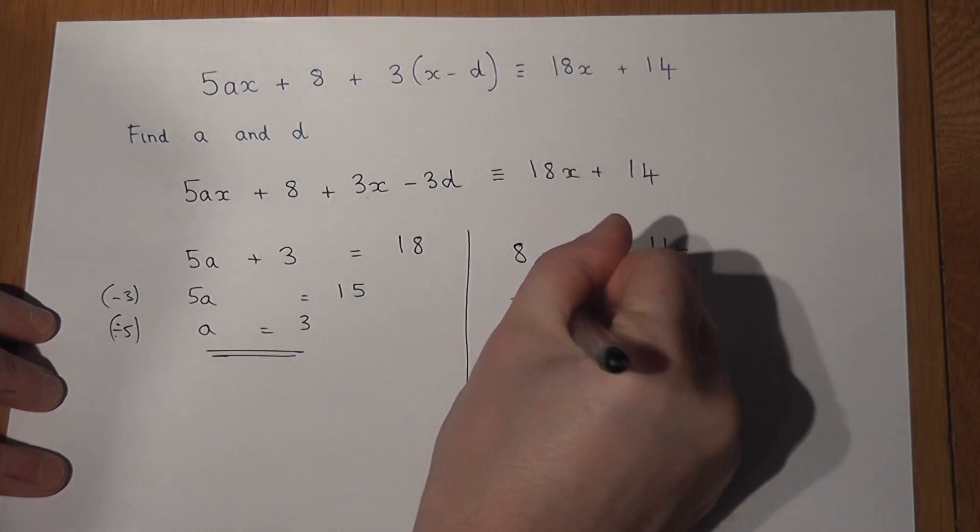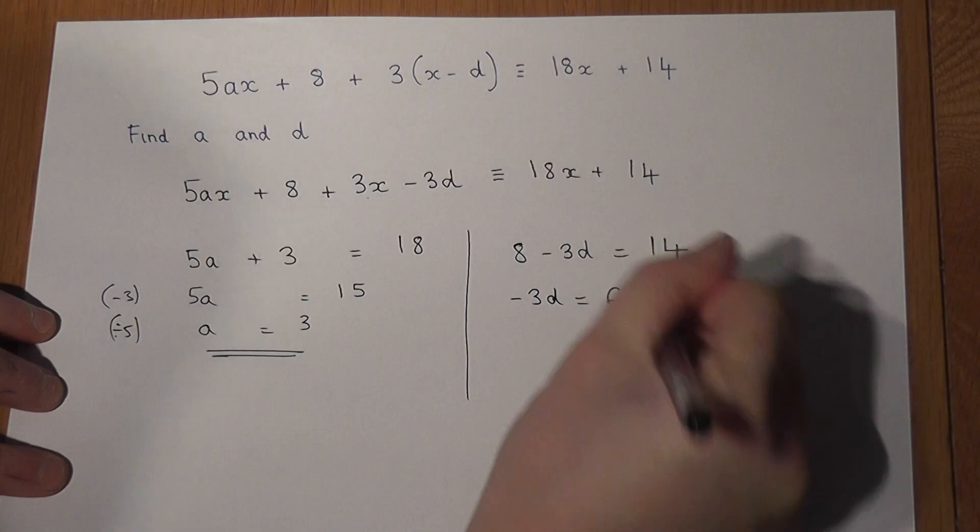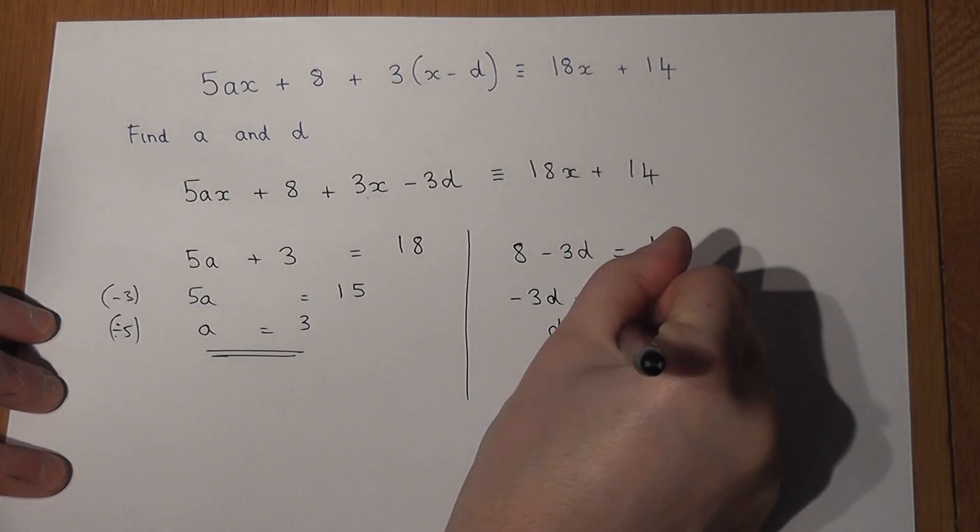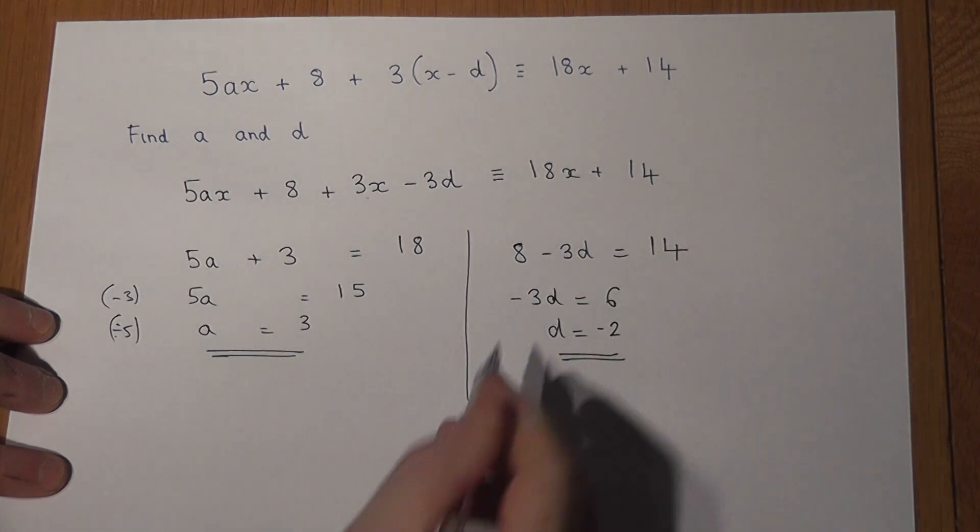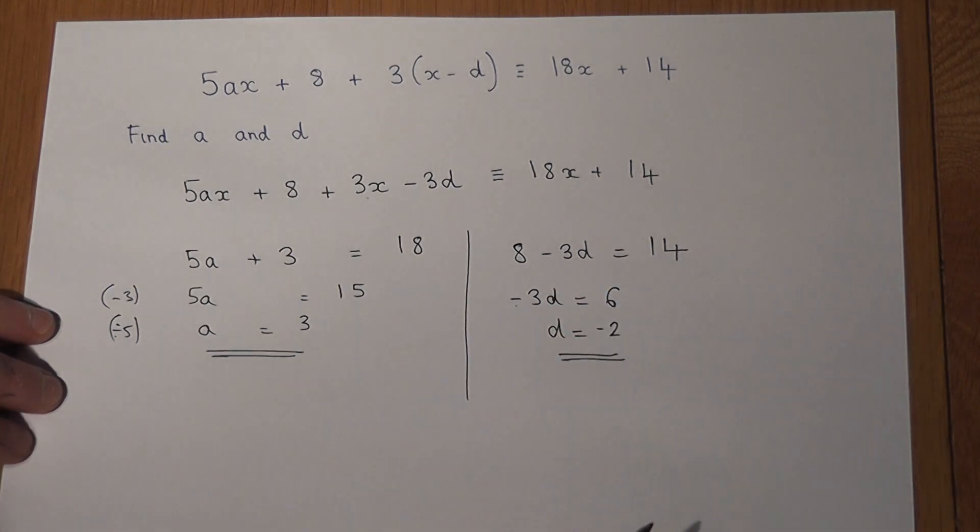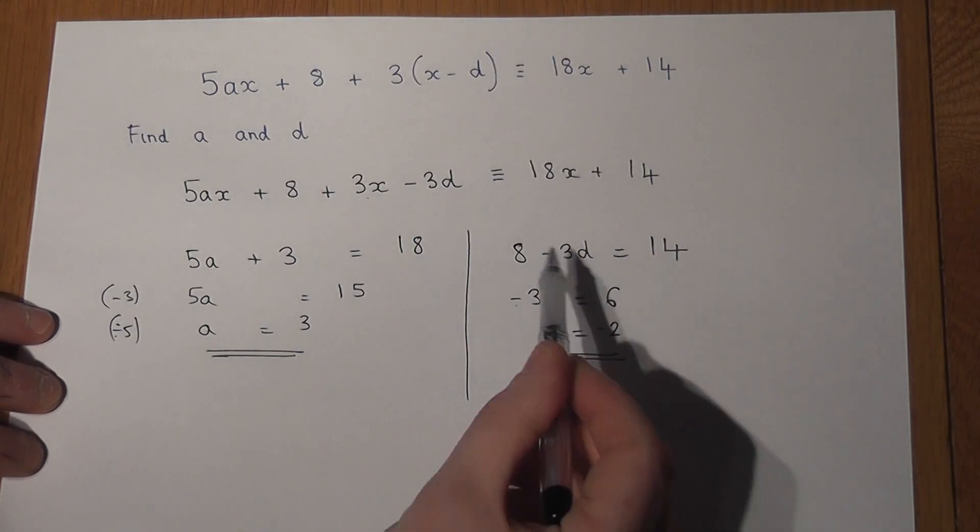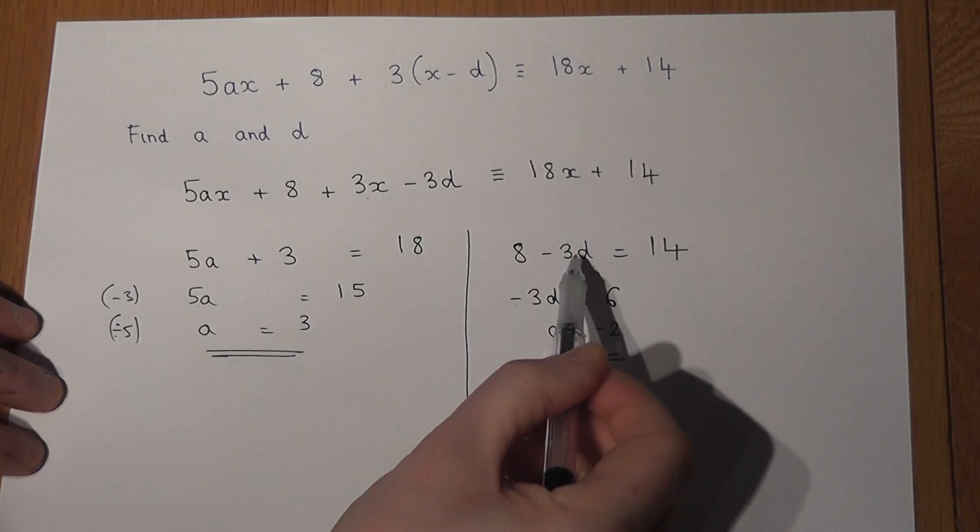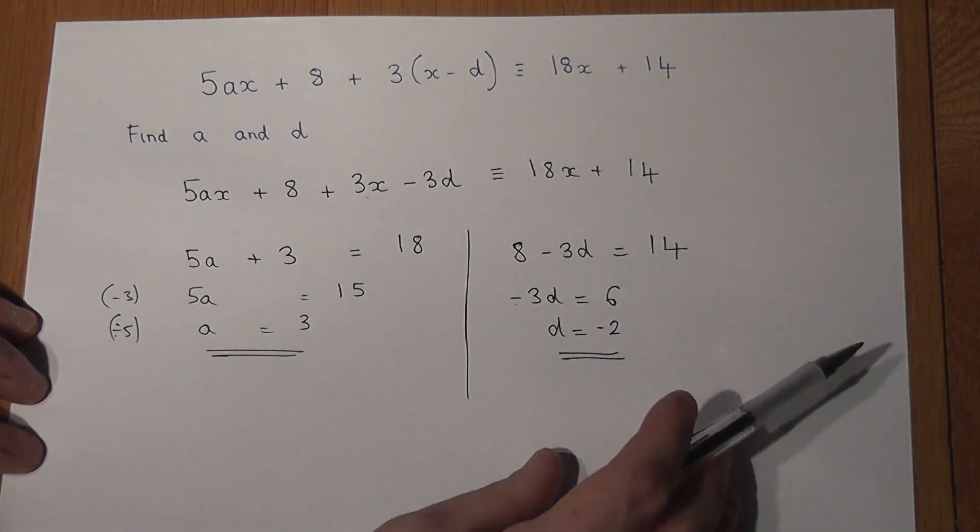So if minus 3d equals 6, then d has got to equal minus 2, because minus 3 lots of minus 2 equals 6. And to check that, minus 3 times minus 2 is 6, and 8 plus 6 does indeed equal 14.